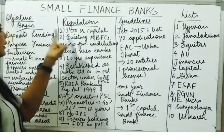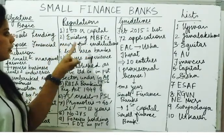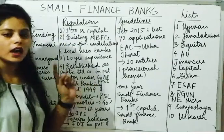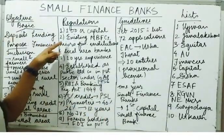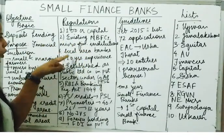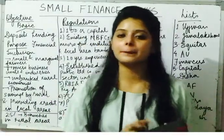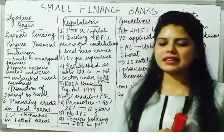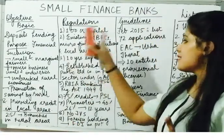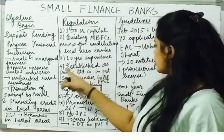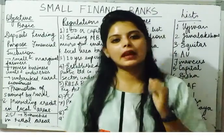Under regulations, the promoter has to have a minimum capital of 100 crore to set up a small finance bank. Second, existing NBFCs — Non-Banking Financial Companies — micro finance institutions, and local area banks can apply for the license, provided they have 100 crore capital.